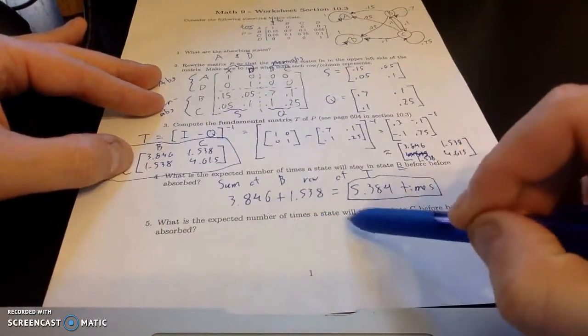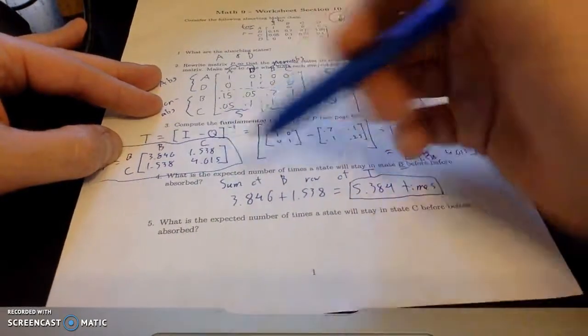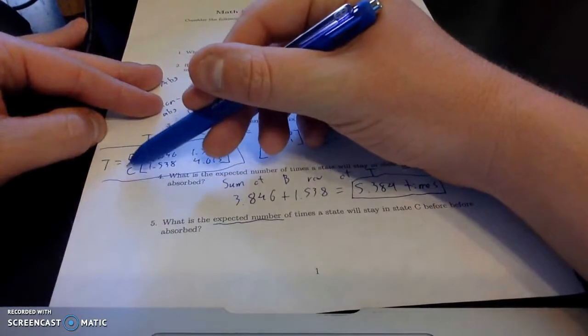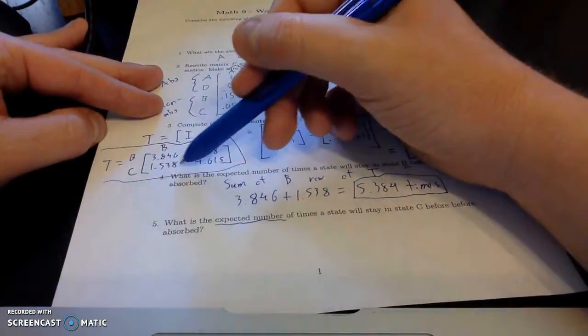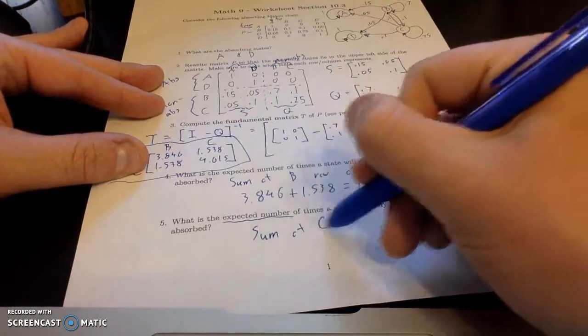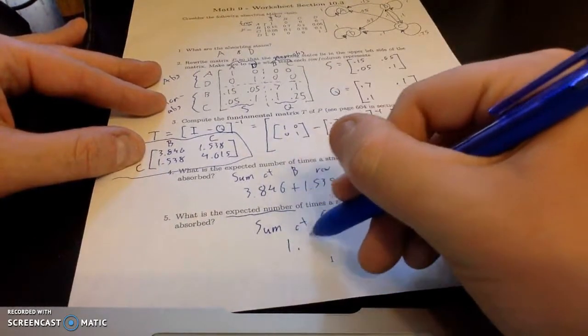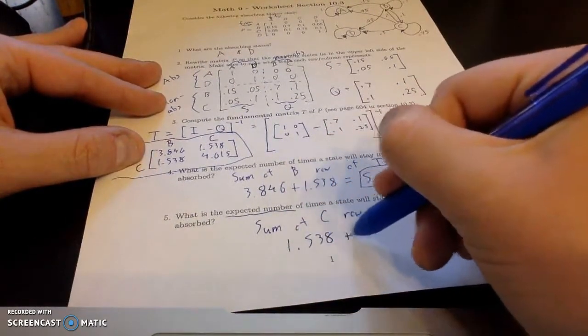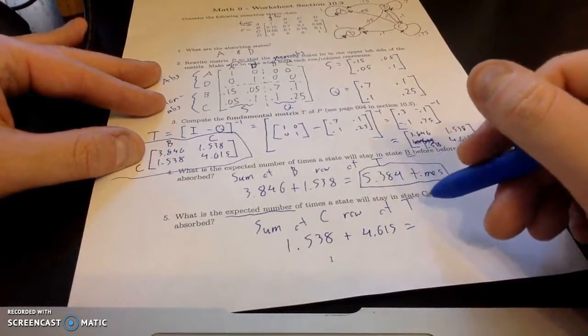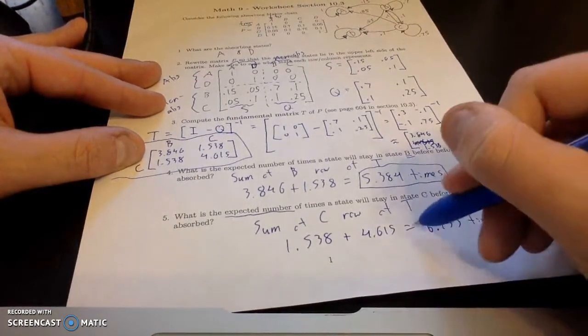If we want to know the expected number of times a state will stay in state C, again, the key word here is expected number. We're going to look at this fundamental matrix T and look at the row that corresponds to C. So we're going to take the sum of the C row of this fundamental matrix. And that is 1.538 plus 4.615. And that adds up to a little over 6.153 times.